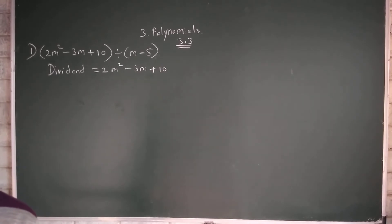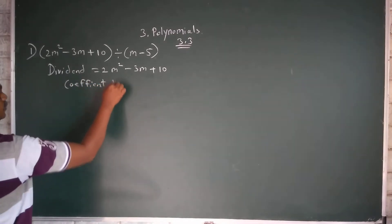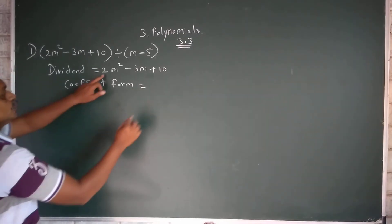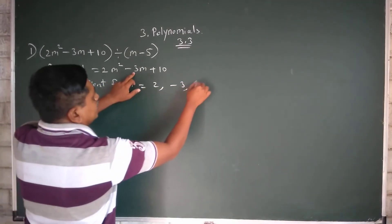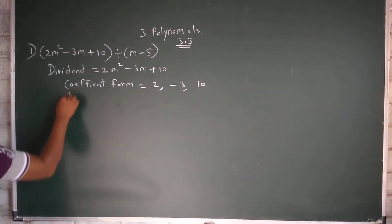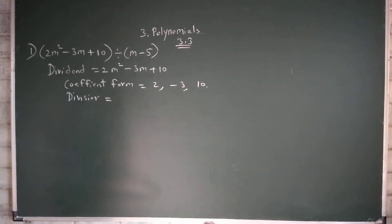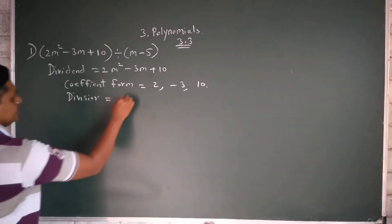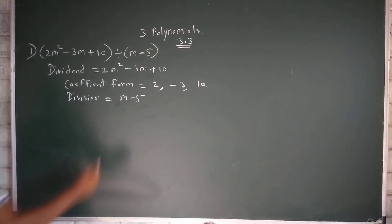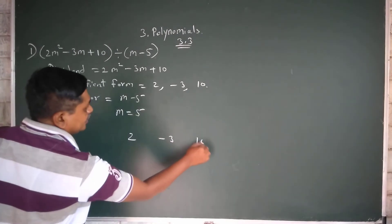Here, coefficient forms are given: 2, -3, 10. Then divisor is m - 5. Minus 5, opposite is plus 5, so m equals 5. We have 2, -3, 10.